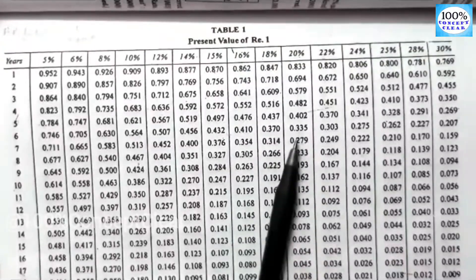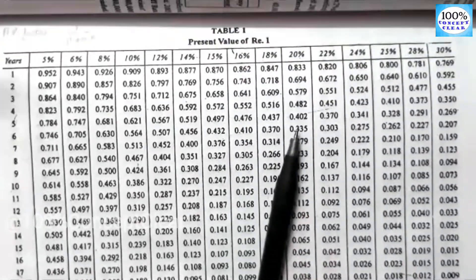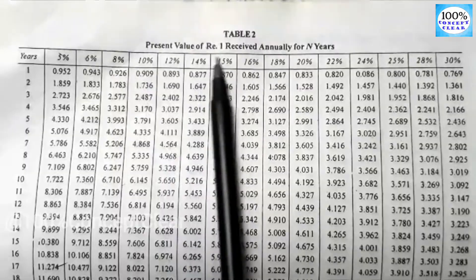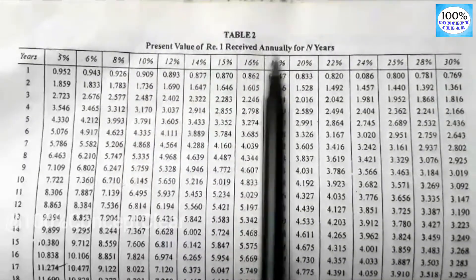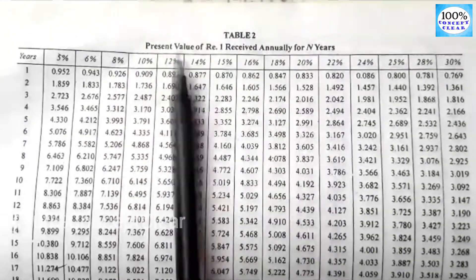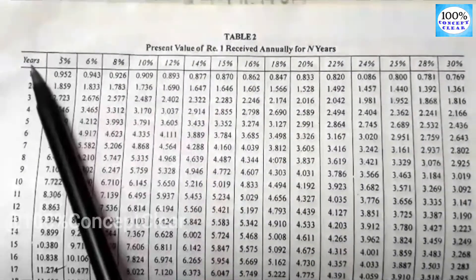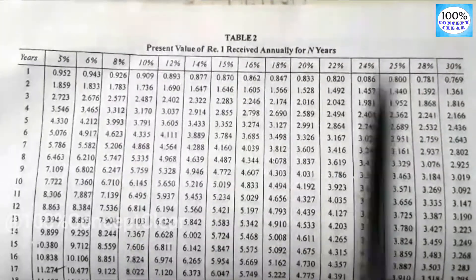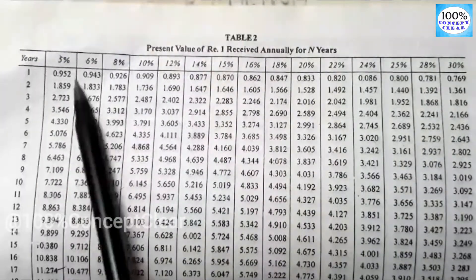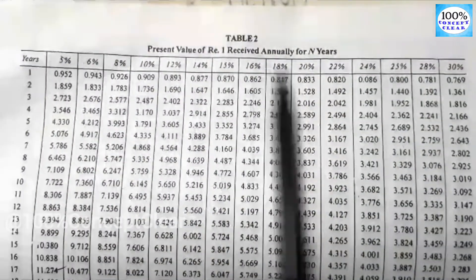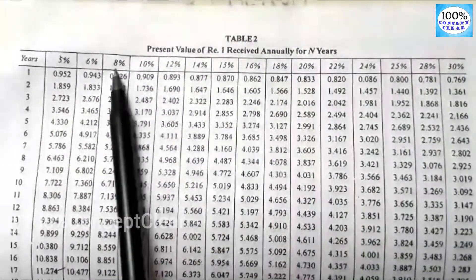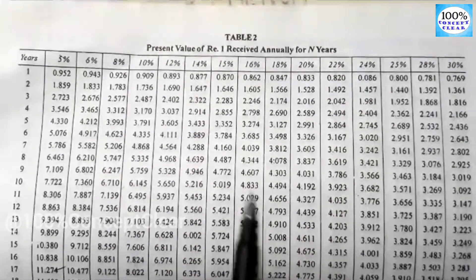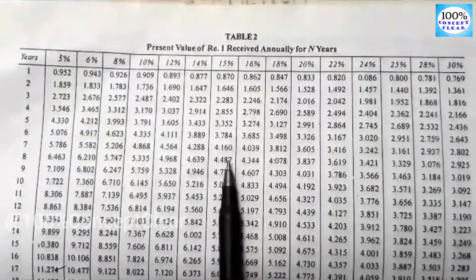Now, what does Table 2 say? Table 2 is the present value of Rupee 1 received annually for N years. We have years and percentage — the internal rate of return percentage — and all the elements are PV factors.